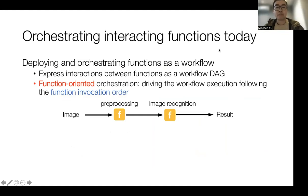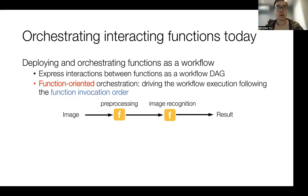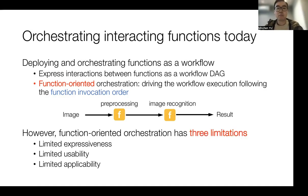This shows a simple example. Assuming there is an image processing application with two sequential functions — image preprocessing and regularization. Once the platform receives an event of the image, it will trigger the processing functions to get the intermediary results and then invoke the regularization function for the binary label. This function-oriented orchestration is pretty effective for simple scenarios.